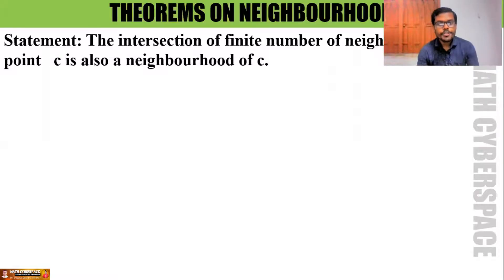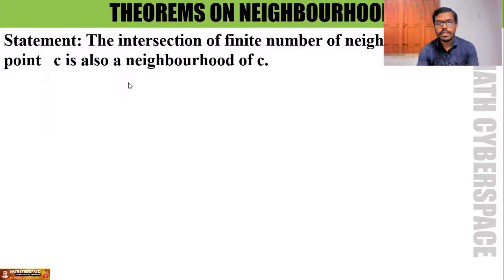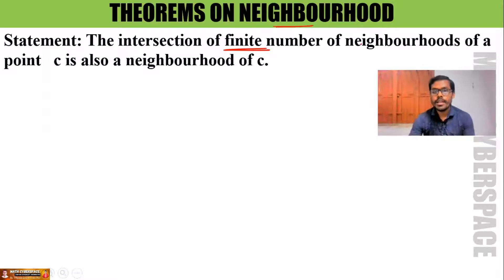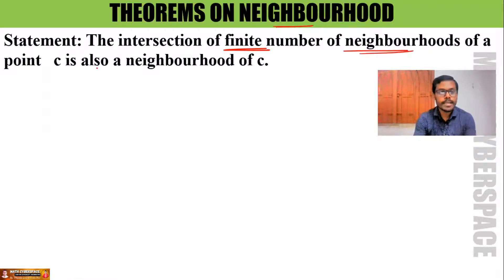Hi everyone. Here is another important theorem from the neighborhood chapter — neighborhood property. The statement of the theorem is: the intersection of a finite number of neighborhoods of a point C is also a neighborhood of C.